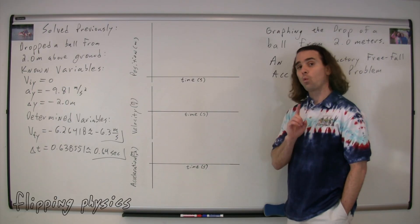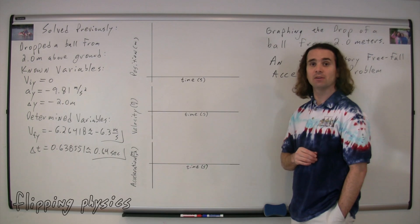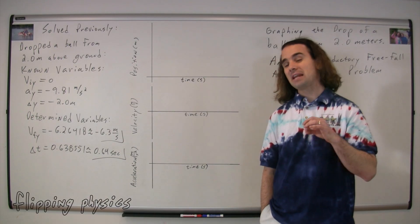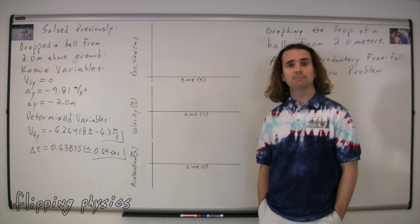Now, one of these three graphs we should know right away. Acceleration versus time. The acceleration is constant at negative 9.81 meters per second squared, so it's just a straight line. I think you actually mean a horizontal line, and where should I draw this horizontal line? A horizontal line at negative 9.81 meters per second squared, because that's the value of the constant acceleration.